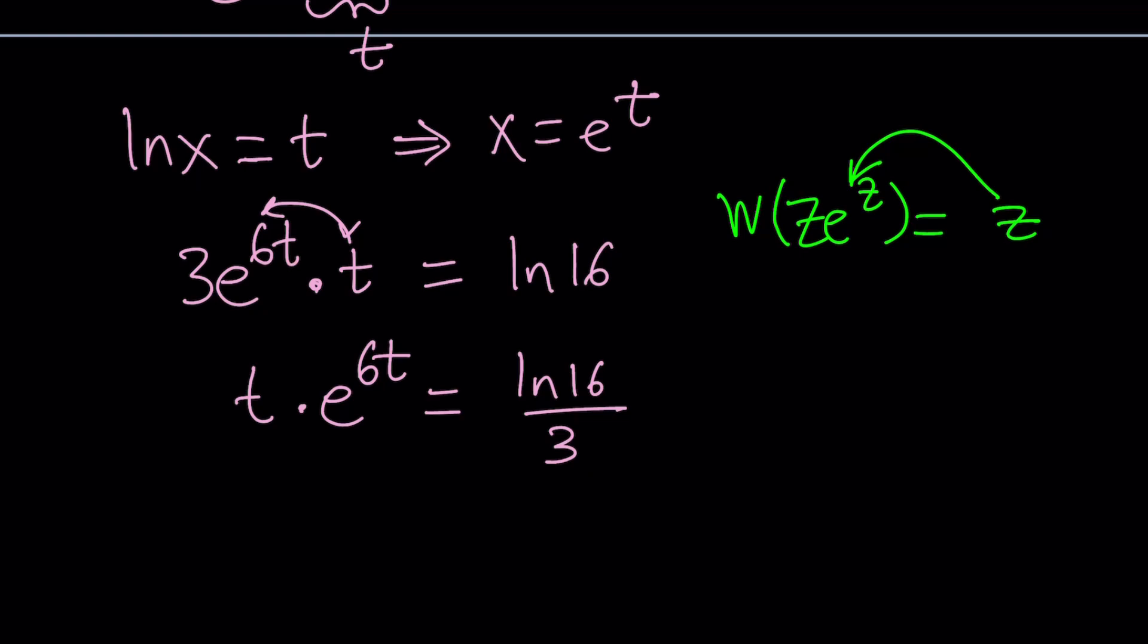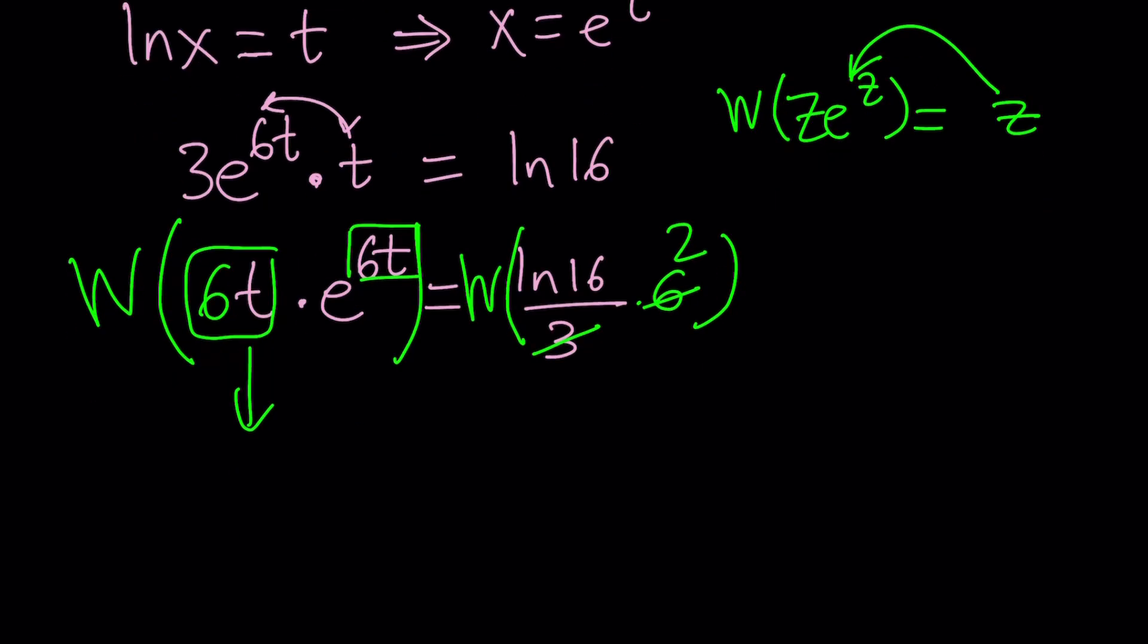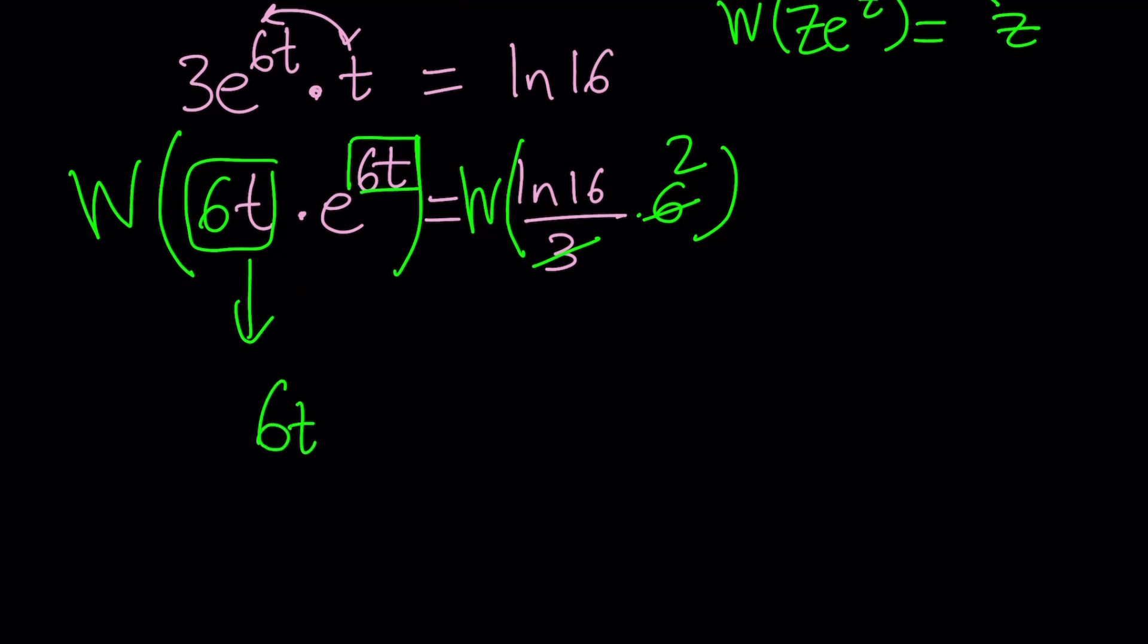But we don't have that structure yet because we have t and 6t. So how do you make that happen? Multiply both sides by 6. That will be the right answer. And of course, 3 goes into 6 two times. So this will simplify what's on the right-hand side. Now, this is going to be our z, right? They have to be the same. And if you apply Lambert's w function on both sides, you'll be getting 6t. And the right-hand side can be written as Lambert's w of 2 ln 16.